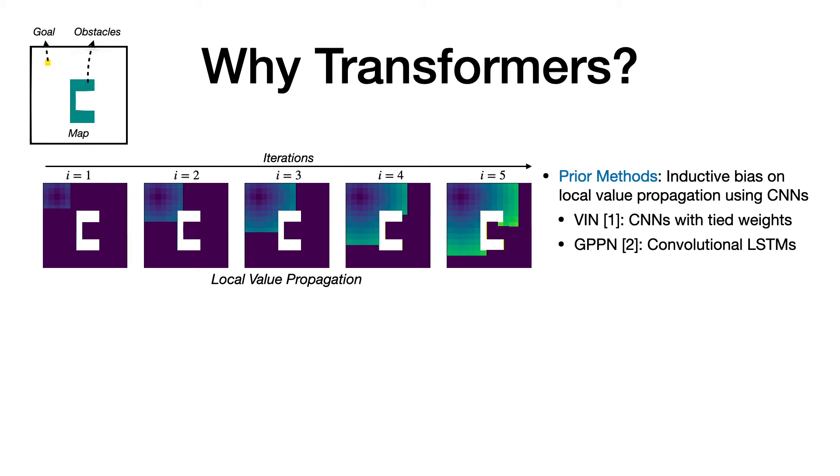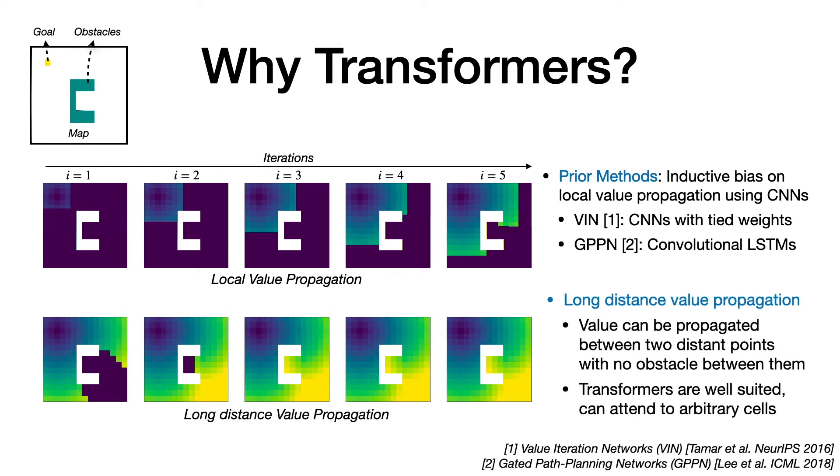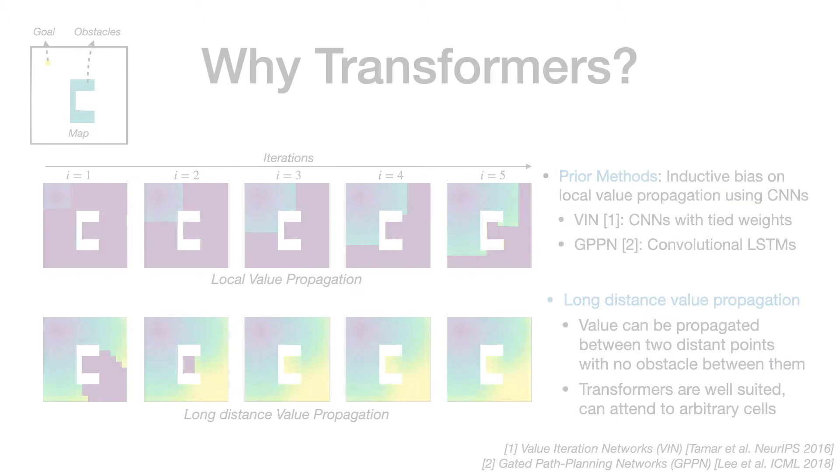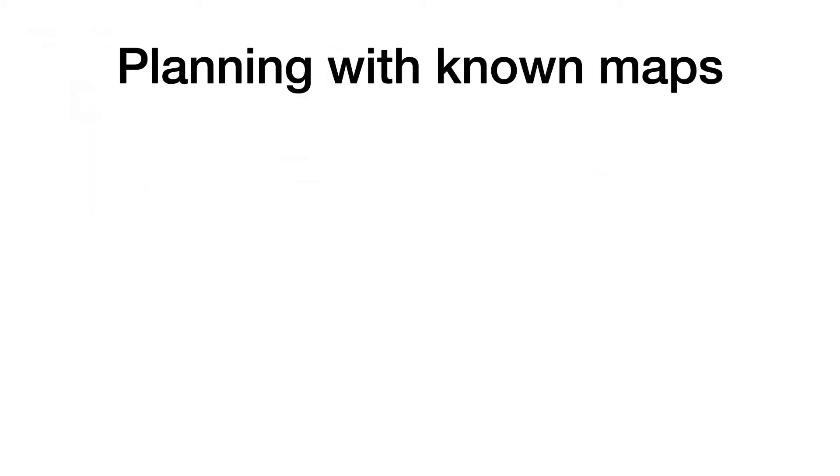The regularity of distances in spatial maps can be exploited to improve the planning efficiency. The value can be propagated between two distant points in a single iteration if there are no obstacles between them. Transformers are well suited for this kind of long distance value propagation as they can attend to arbitrary locations on the map. We consider two settings in our experiments: known maps and unknown maps.